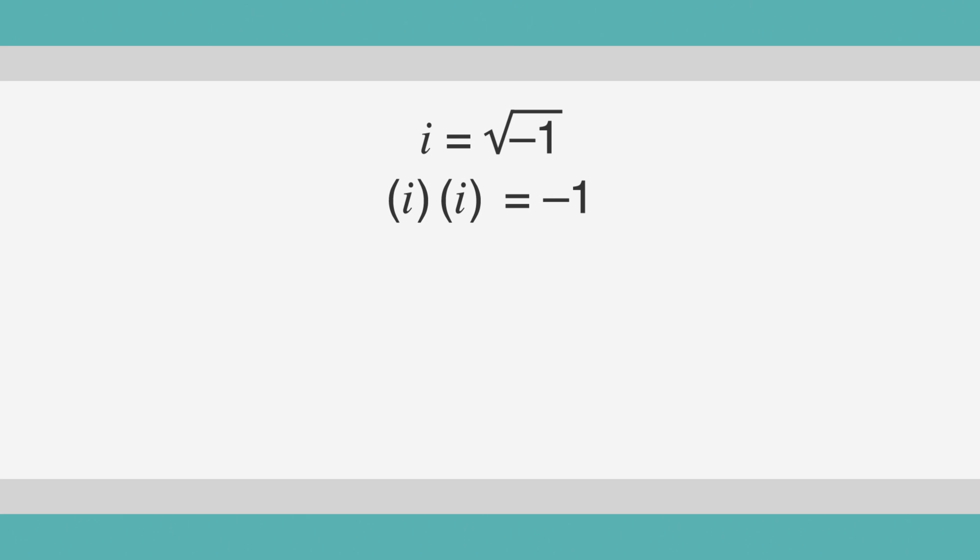This information comes in handy when you have an i with an exponent. We can express i times i as i squared. So i squared equals negative 1. i to the third equals i squared times i, which equals negative 1 times i, which equals negative i. And i to the fourth is equal to i squared times i squared, which equals negative 1 times negative 1. So i to the fourth equals 1.